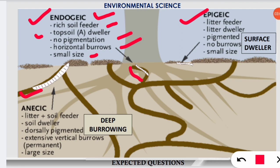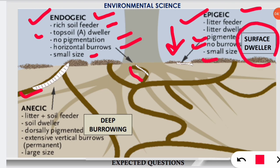The second kind is epigeic earthworms. 'Epi' relates to the upper layer, like epidermis. Epigeic earthworms are litter feeders — also called litter dwellers — because they feed on litter falling from plants and trees. They have pigmentation, unlike endogeic. They do not dig any burrows, are small in size, and are called surface dwellers.